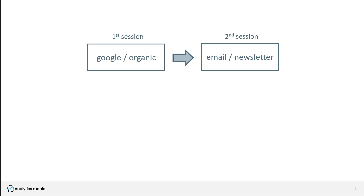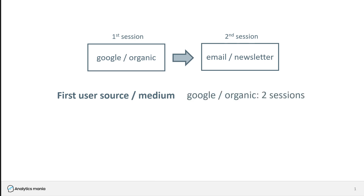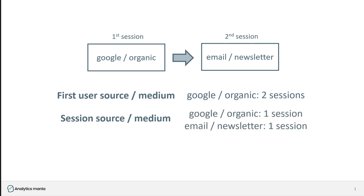That visitor later returned from an email newsletter — so in total we tracked two sessions of that one user. If you look at the report using First User Source/Medium, then both sessions will be attributed to Google organic, even though the second session was a different traffic source. However, in the Traffic Acquisition report using Session Source/Medium, you will see two rows: one for Google organic with one session, and one for the email newsletter with the second session.